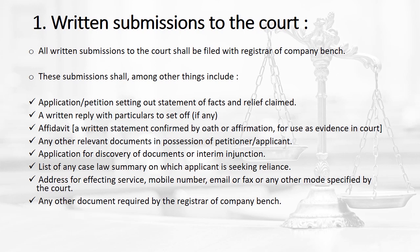The next submission item is an application for discovery of documents or interim injunction. An interim injunction is issued at an early stage of proceedings. It is of two types: a mandatory injunction, where you are required to perform a specific act; or an injunction where you are prohibited from doing a specific act for a certain period of time. These two injunctions are issued at the initial stage of proceedings.